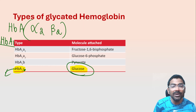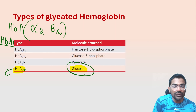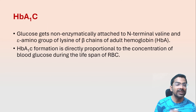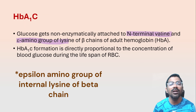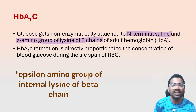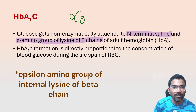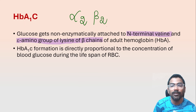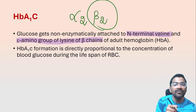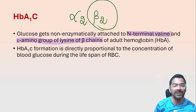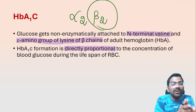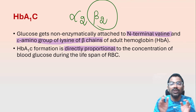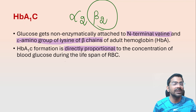In diabetes mellitus, blood glucose level is very high. HbA1c means glucose is non-enzymatically attached to the N-terminal valine and epsilon amino group of the beta chain of adult hemoglobin. Since HbA is made up of alpha-2 beta-2, glycation involves mostly the beta chain in HbA1c because this is a non-enzymatic process.